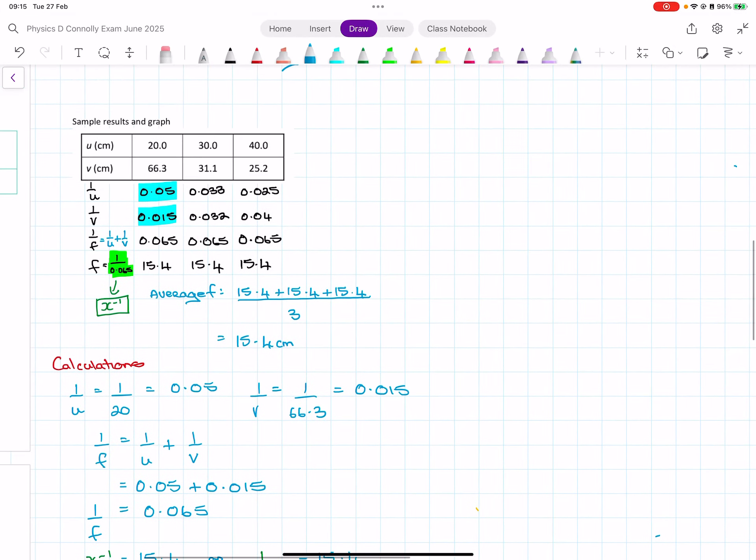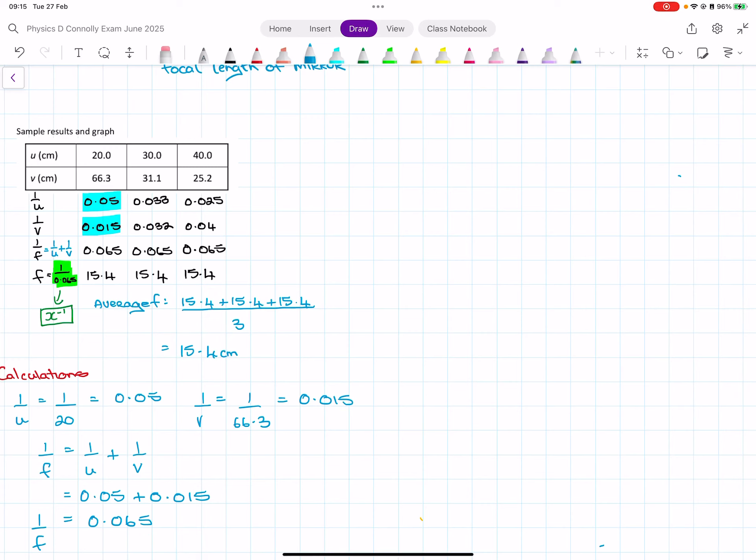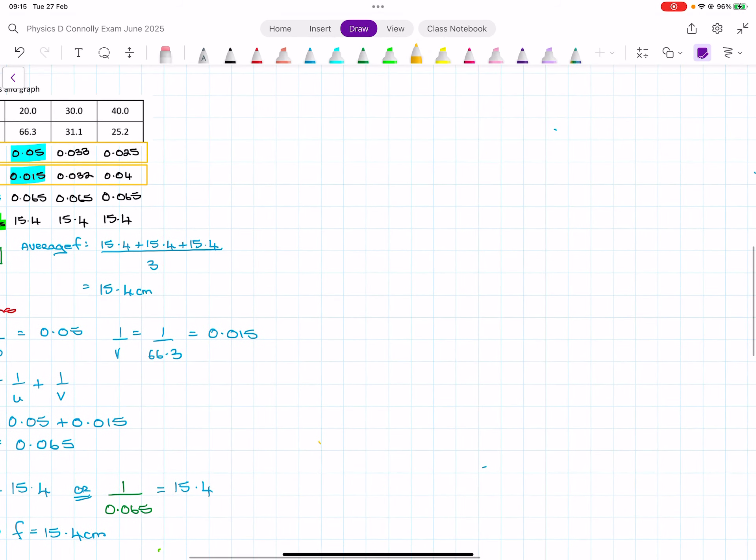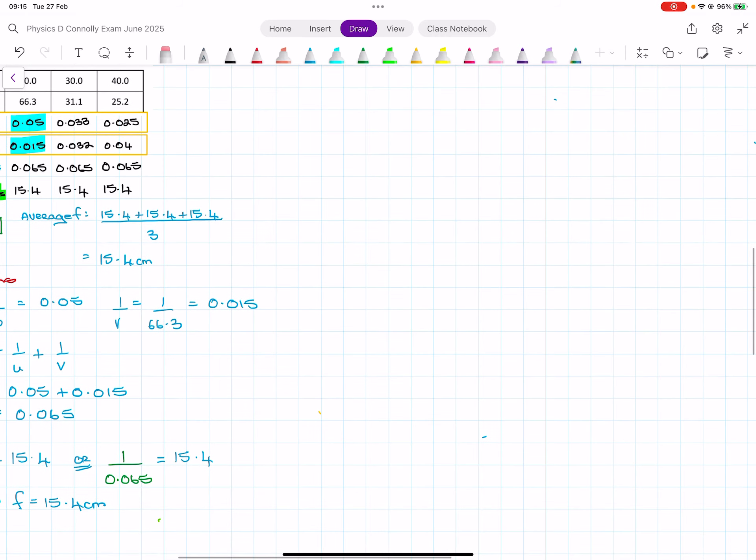Okay, so now the graph. For the graph we're plotting these lines here - we're plotting 1 over u and 1 over v. It doesn't really matter for this particular graph which one goes on which axis, so I'm just going to fit as big a graph as I can here.